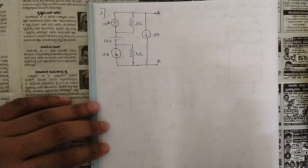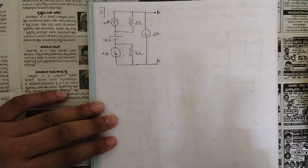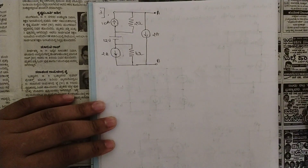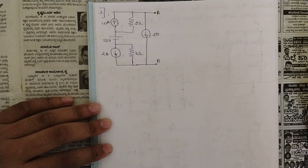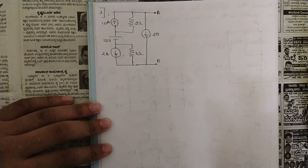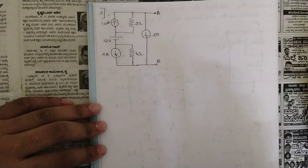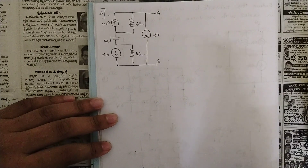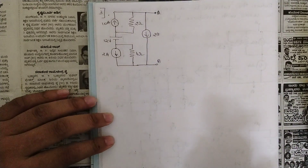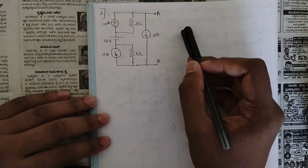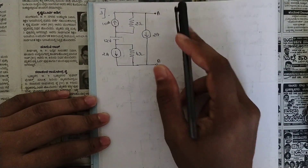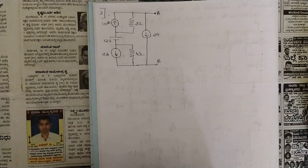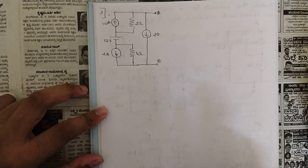Hello everyone, welcome to this new video of the network analysis lecture series. We have completed three videos so far — two related to basic concepts, and in the previous video I discussed two important problems related to source transformation. In this session, we are going to continue with two more different kinds of circuits and see how the network is reduced between the two terminals, giving one voltage source and one resistance between terminals A and B. The first problem is simple and the second is more challenging.